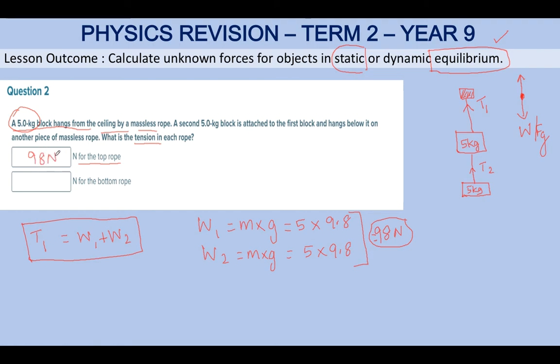What about T2? T2 will have only the weight of the second object. The second object's weight will be balanced by T2. So T2 = W2 = 5 × 9.8 = 49 newtons.